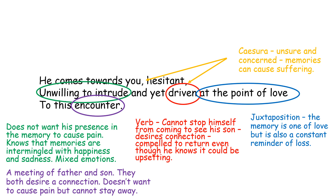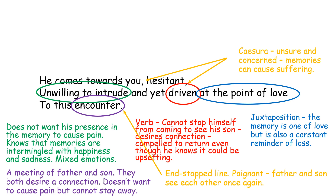You'll also notice that those parenthetical commas around the word hesitant can be labelled as a caesura. I've left this to last because I think it really shows the feelings of the father who returns — how unsure and how concerned he is. He doesn't want to continue to cause pain with his son. He wishes he could improve that relationship, he wishes he could articulate himself, but he doesn't feel like he has the ability to do so. The final part is the end-stopped line. I think that adds a poignancy, a tragic nature, that this father and son will never be able to bridge the divide. They see each other once again, but they cannot really get the relationship that they want from each other. It seems like it's always going to be a relationship of disappointment.